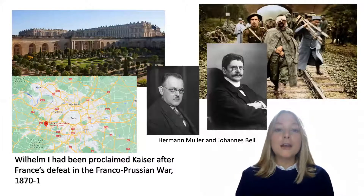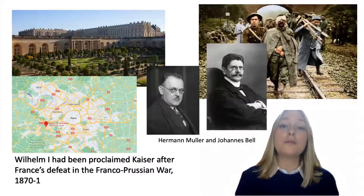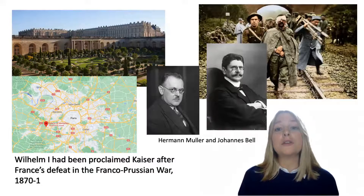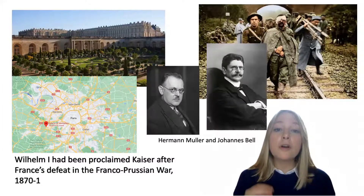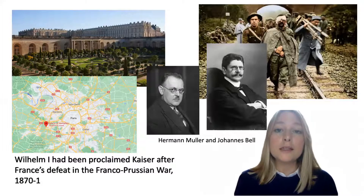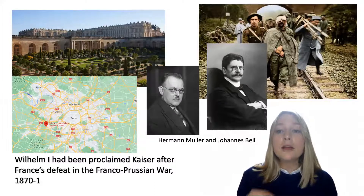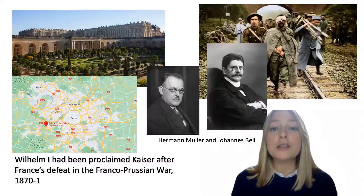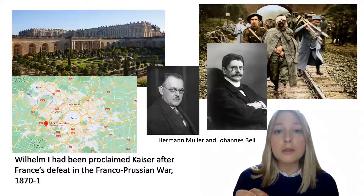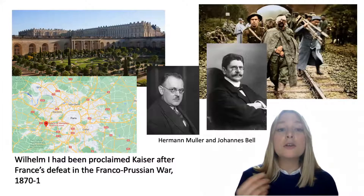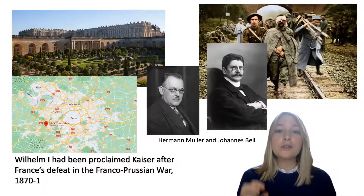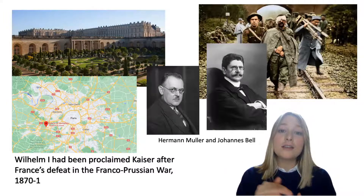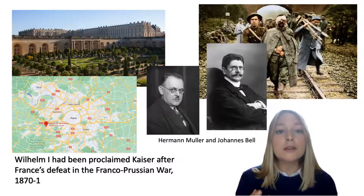In addition, the Allies partook in the deliberate humiliation of Germany at the Paris Peace Conference. Firstly, the venue had been carefully chosen. It was the very same place where, after France's defeat in the Franco-Prussian War of 1870–71, Wilhelm I had been proclaimed Kaiser of a unified German nation state. Otto von Bismarck, the Chancellor of Prussia, had consciously chosen Versailles as the stage for the symbolic humiliation of a recently defeated France. Now the tables had turned, and the opportunity had arisen for France to avenge that humiliation.